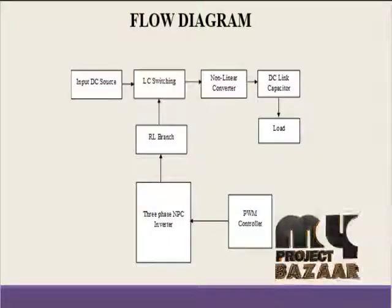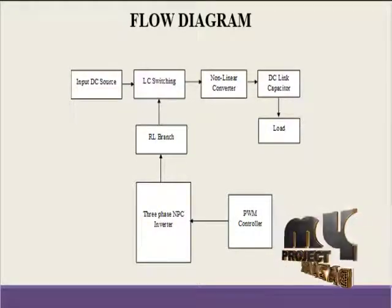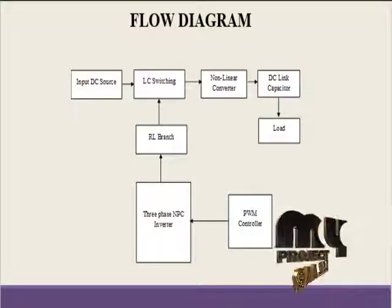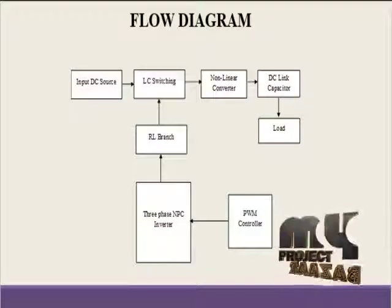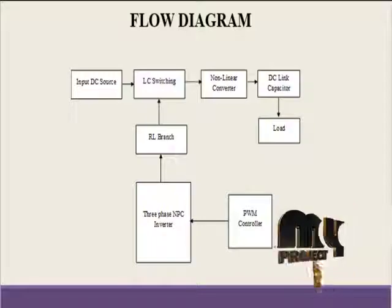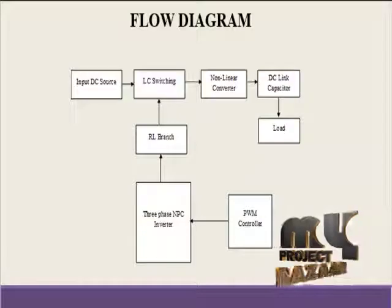Now we are going to discuss about our product flow diagram. Here we are designing the process using the MATLAB Simulink tool for DC to AC inverter based on some applications. The input DC source is denoted as VG from the initial stage. We are giving 2 types of VGs, each block given an input voltage of DC 48V, connected in series and parallel to the input voltage and LC switches.